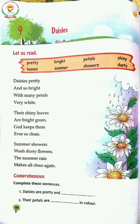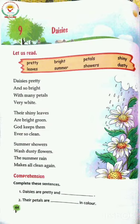'Summer showers wash dusty flowers, the summer rain makes all clean again.' Summer showers hoti hai — jab garmi mein barish hoti hai, us ki jo boondhe girti hai, use shower bhi bolte hai. Woh flowers ki jo dust hoti hai, unke oopar — unko dhoh deti hai. Jo dusty flowers hoti hai, un par mitti jami hoti hai, unko dhoh deti hai jab barish hoti hai garmi mein. Summer ki rain hoti hai, woh dubara se unko clean kar deti hai — flowers ko sundar bana deti hai.